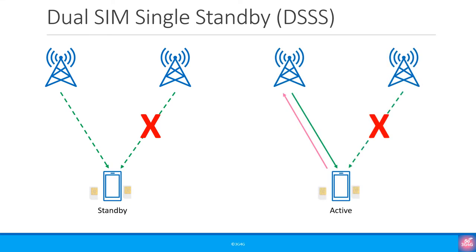If someone were to call the SIM that was switched off, a message would tell you the phone was switched off, or it would go to voicemail. To make that SIM active you would have to select it from the menu, but then the first SIM would be switched off. One workaround was to have the switched-off SIM forward calls to the active one, but this wasn't a good solution at all.